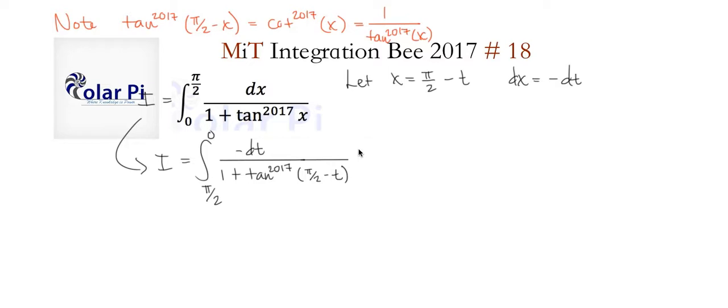So we have this. Where to from here? Well, we made a very important observation here in red, which is the tangent to the power 2017 of pi over 2 minus theta is 1 over tangent to the power 2017 of theta. And yes, I'm intentionally using theta instead of x, but you get it. Therefore, this here can be replaced by 1 divided by tangent to the power 2017 of t.